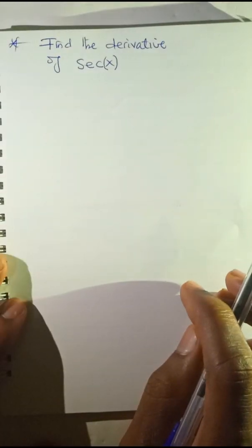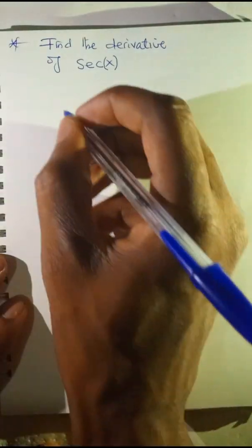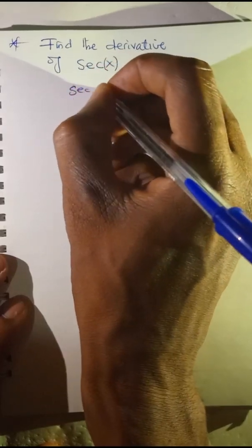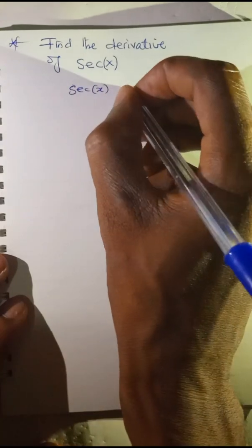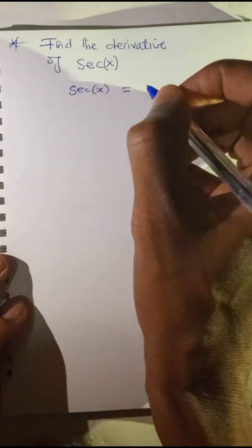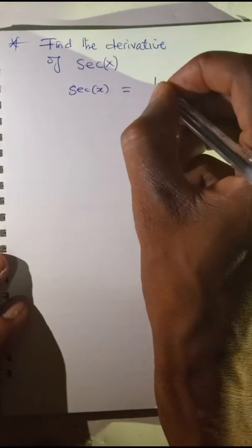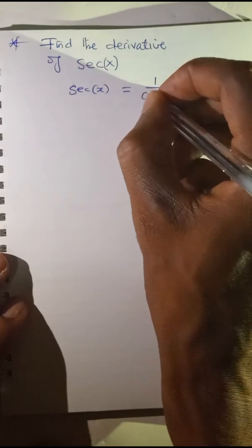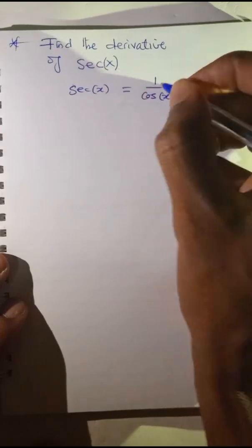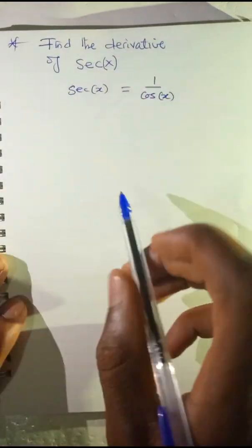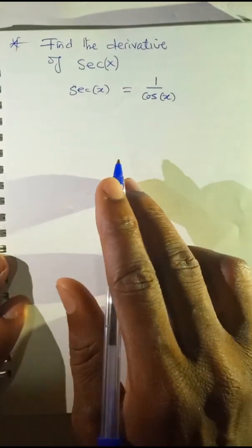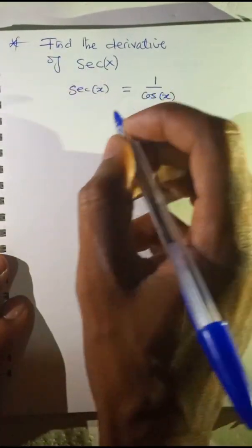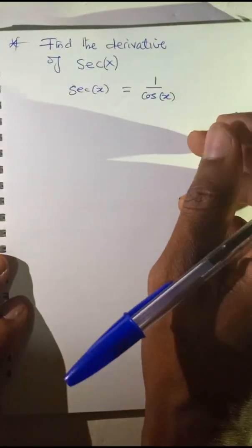Now find the derivative of sec x. First of all, you know that sec x is equal to 1 over cos x, which is an inverse trig function. So this can also be transformed as a power function.